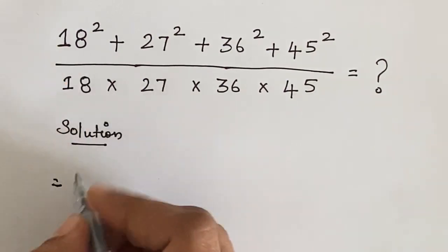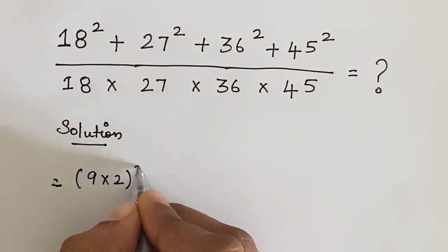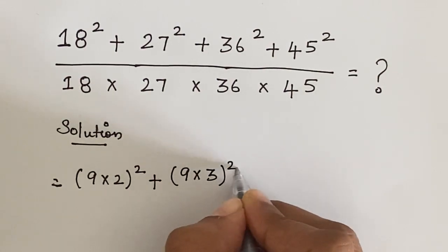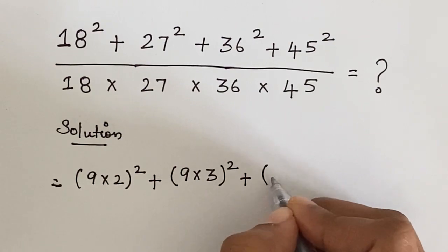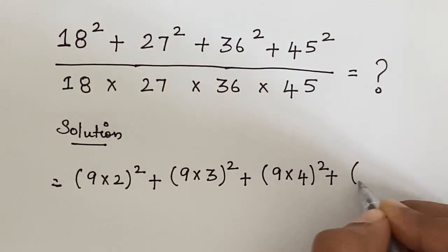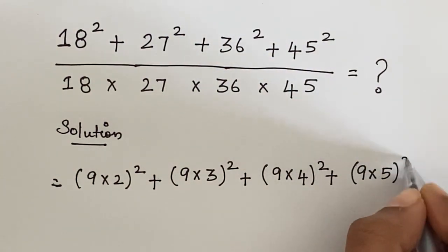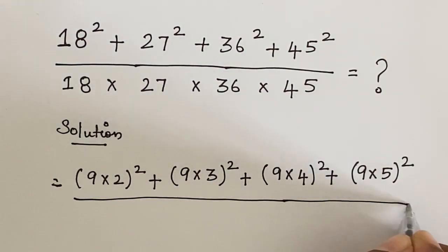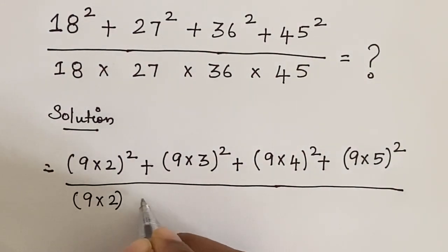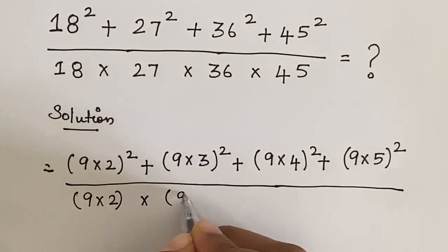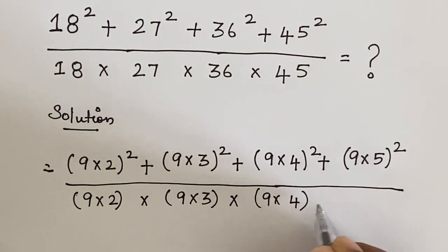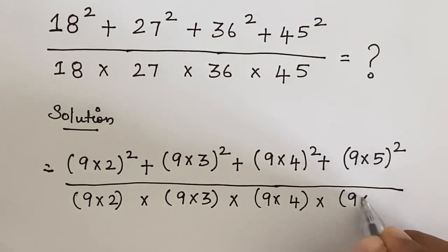So here 18 squared can be written as (9 times 2) whole squared, plus 27 squared can be written as (9 times 3) whole squared, plus 36 squared can be written as (9 times 4) whole squared, plus 45 squared can be written as (9 times 5) whole squared. Similarly in the denominator, 18 can be written as 9 times 2, 27 as 9 times 3, 36 as 9 times 4, and 45 as 9 times 5.